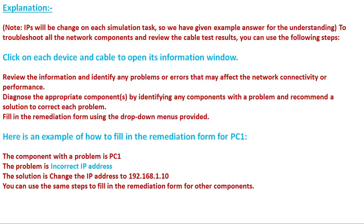Note that IP addresses will be different on each simulation task, so the following is an example answer for understanding. To troubleshoot all network components and view cable test results, click on each device and cable to open its information window, then review the information and identify any problems. For PC1, the component with the problem is an incorrect IP address — select 'incorrect IP address' in the remediation form and the solution is to change the IP address to 192.168.1.0.